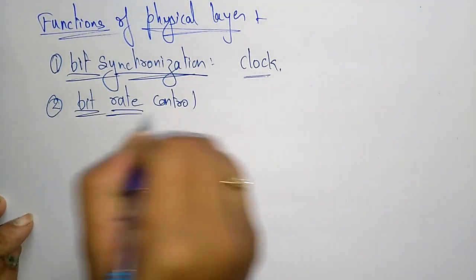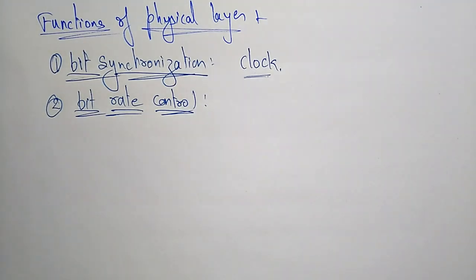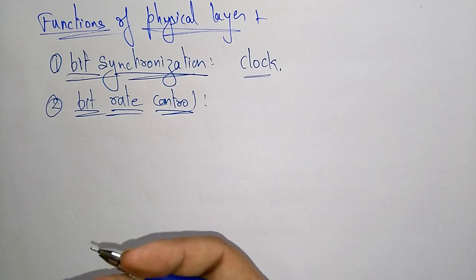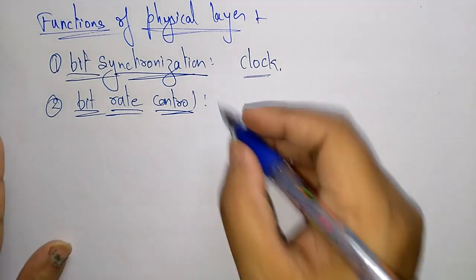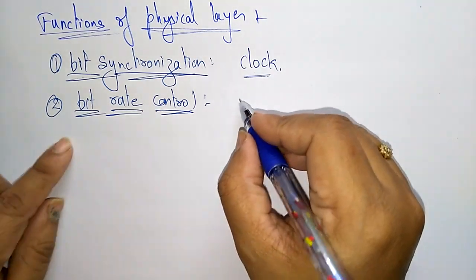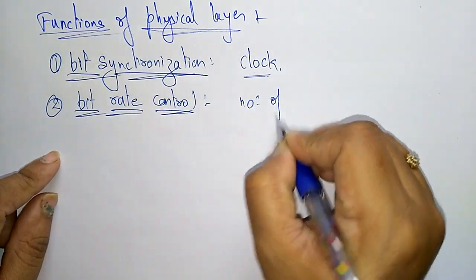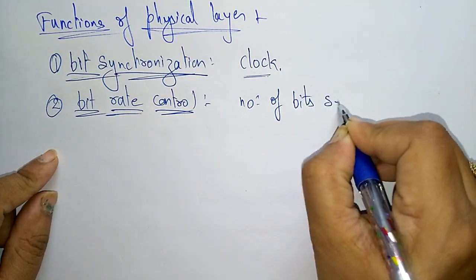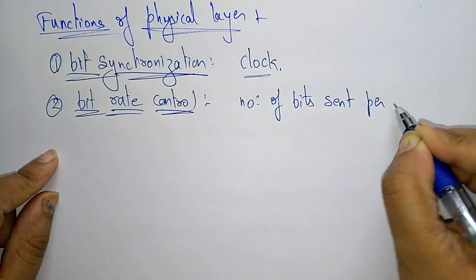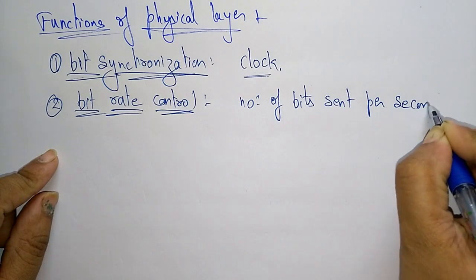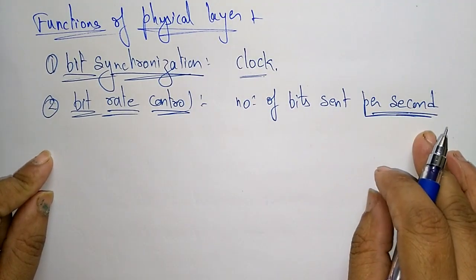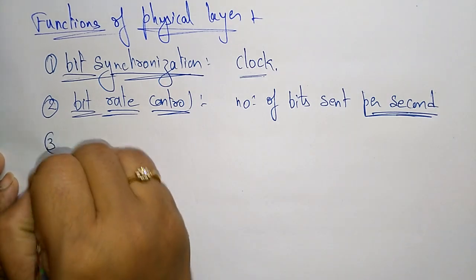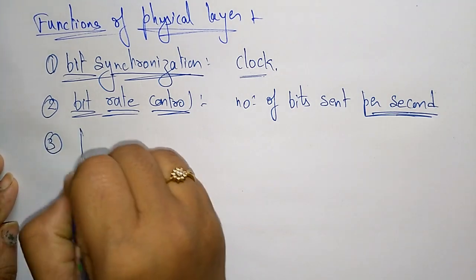The physical layer also defines the transmission rate, that is the number of bits sent per second. Bit rate control will be done by controlling the number of bits sent per second. They are controlled by sending bits per second.